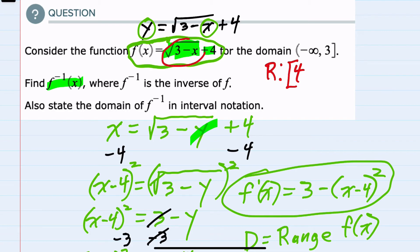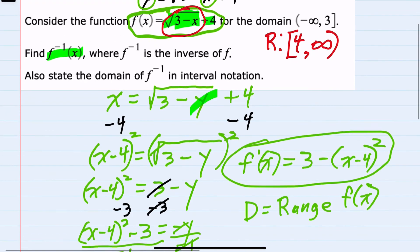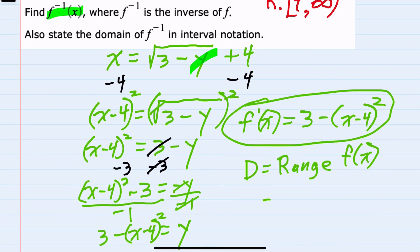But then anything else we would start to add to 4, and we would add all the way up to positive infinity. So since the range for our original function is 4 to infinity, then the domain for our inverse function will have to be the same. It will be 4 to positive infinity.